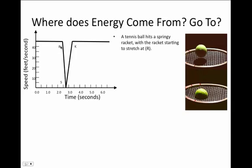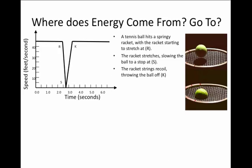And as the racket stretches, the speed slows down. For an instant in time, the ball comes to a rest, squished up against the racket. And then the racket recoils back again, throwing the ball off at this point K on the graph.